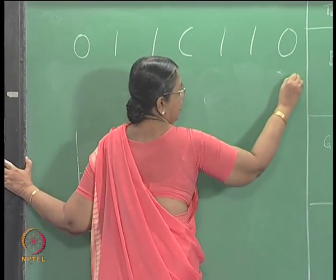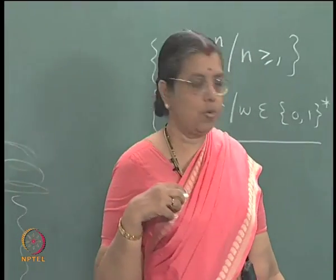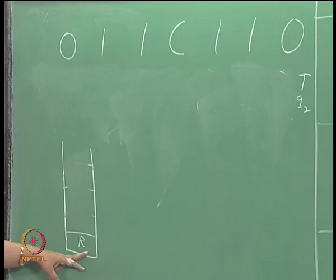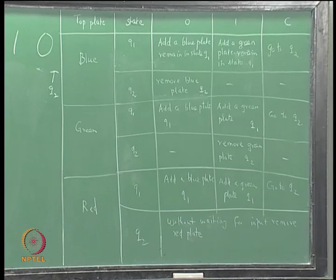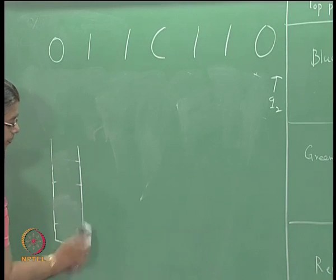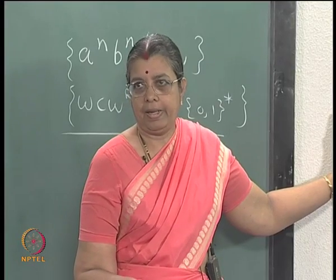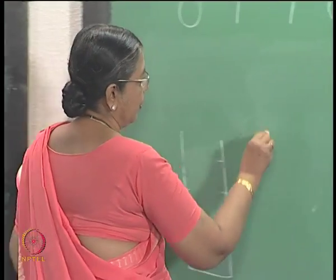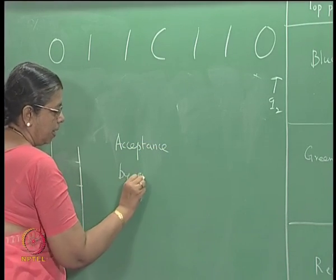Now the whole input has been read and you are in state q2. There is one symbol remaining on the stack — the red symbol. The action is: when you have red in q2, without waiting for the input, remove the red plate. You need not read anything — just without waiting for the input you remove this. So at the end of reading the input the stack has been emptied, and this string will be accepted by the machine. This is acceptance by empty store.